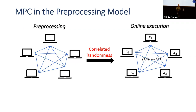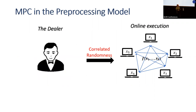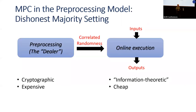In the dishonest majority setting, a very popular model is the pre-processing model where computation is divided into two phases: an offline phase and an online phase. In the offline or pre-processing phase, the parties generate correlated randomness which is later consumed in the online execution. The advantage of this model is that we can move all the expensive public key crypto machinery to the offline and obtain an online execution which is very fast, cheap, and basically information-theoretic.